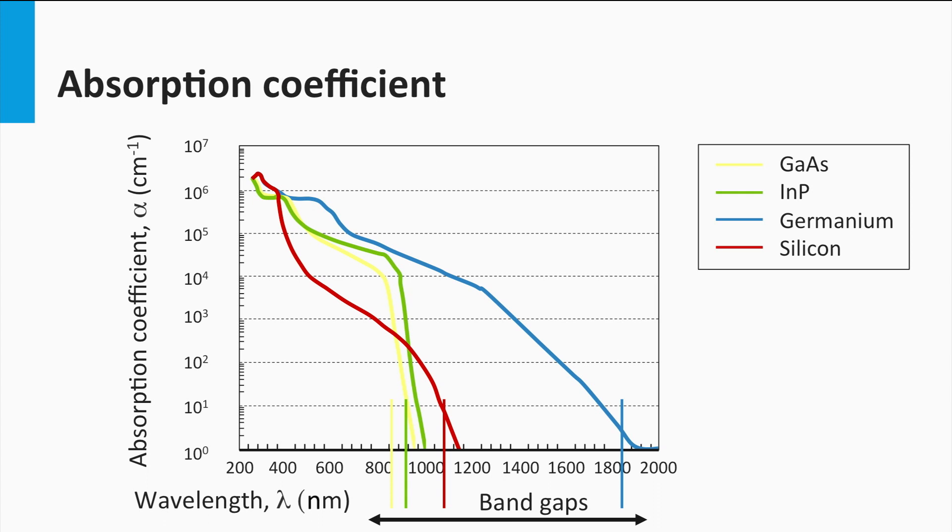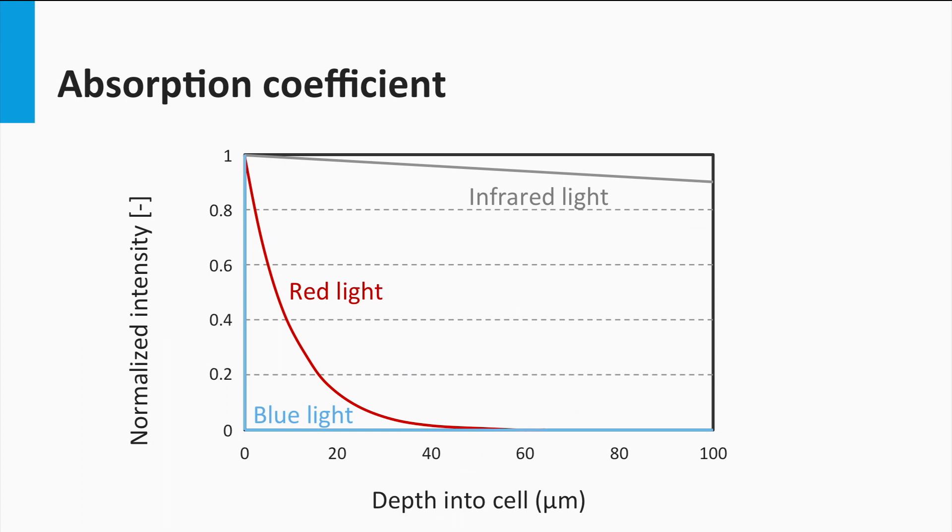In general, all semiconductor materials show that the absorption coefficient in the blue is orders of magnitude larger than in the red. This means that the penetration depth of blue light into the absorber layer is rather small.